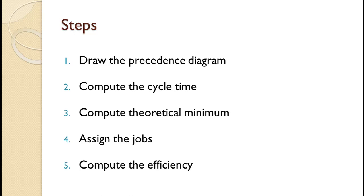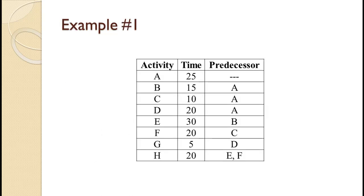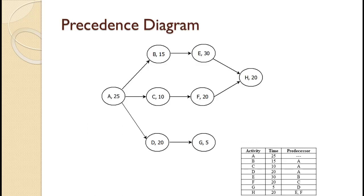We will now see how to perform assembly line balancing using an example. In this example there are 8 tasks to be performed on an assembly line. The activities, the time required in seconds, and the predecessors for each activity are shown on the slide. They operate for 8 hours a day and wish to produce 800 units per day. This is one of the examples from the precedence diagram tutorial, and the resulting diagram is shown on the slide.